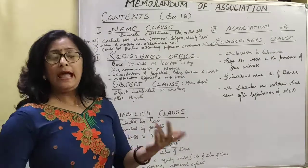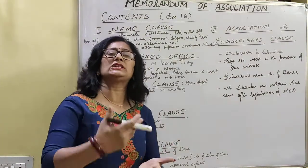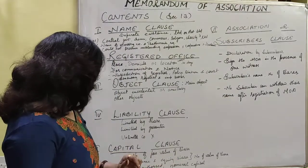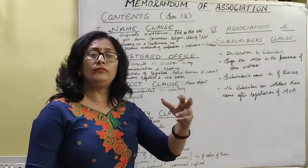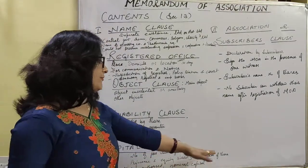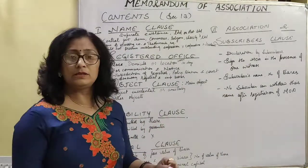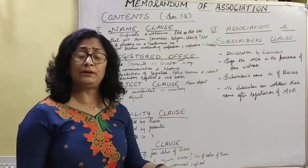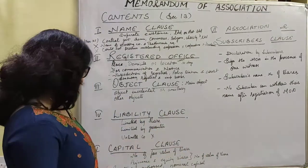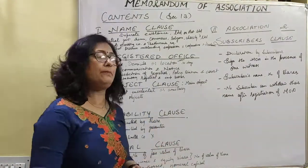Next is the Capital clause. As the name indicates, the capital clause describes the face value of shares, how many shares are issued by the company, the number of equity shares, and the number of preference shares. The total value of shares is also mentioned in this capital clause. It also describes what the registered capital, authorized capital, and nominal capital are. The registered capital is never equal to the authorized capital.